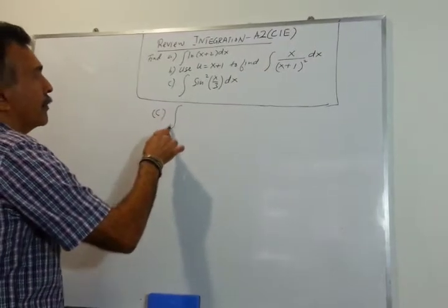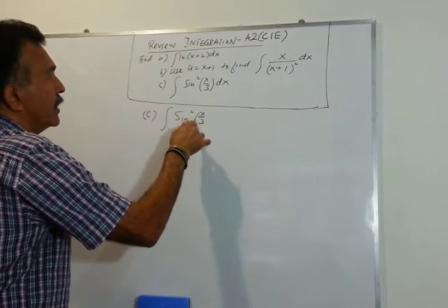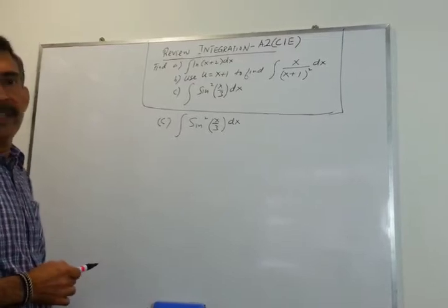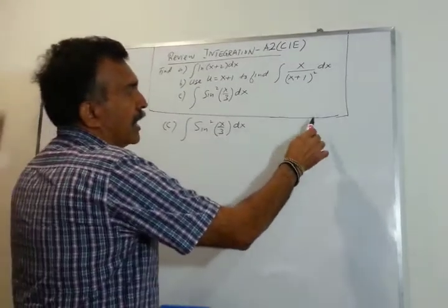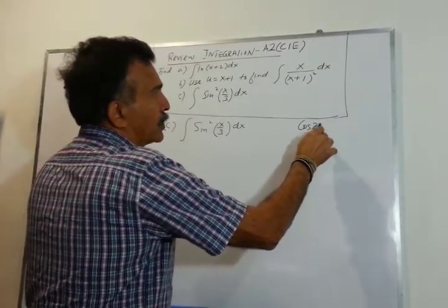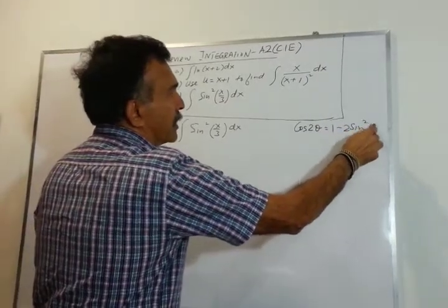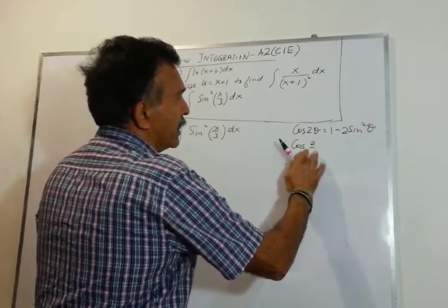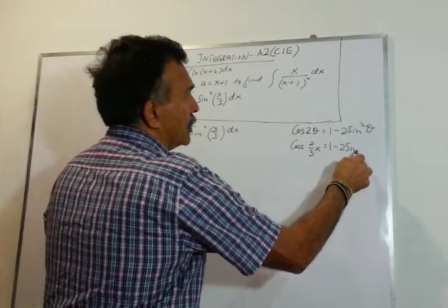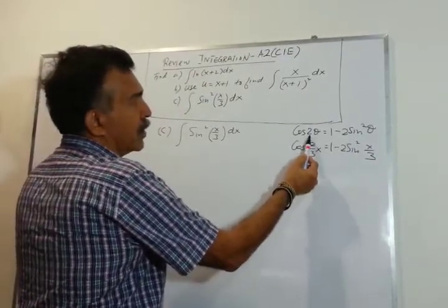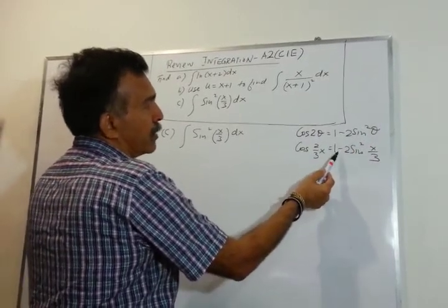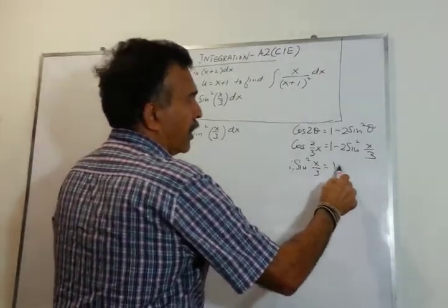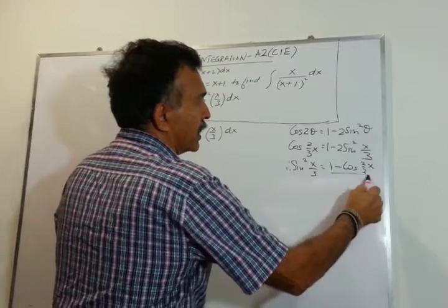In part C, we are integrating sin²(x/3) with respect to x. You cannot integrate sin² directly, so we use the double angle formula: cos(2θ) equals 1 minus 2·sin²(θ). Therefore cos(2x/3) equals 1 minus 2·sin²(x/3).